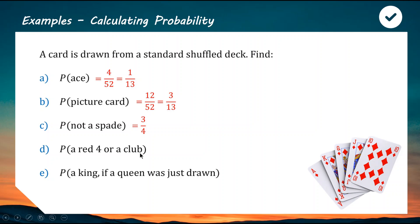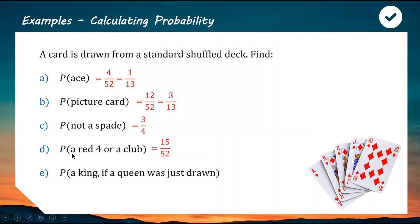Probability of a red four or a club: out of the 52 cards, we need to count how many are red fours and how many are clubs. Clubs is one suit so there are 13 of those. Red fours — there's the four of hearts and the four of diamonds, so there are two. Since we want this or that, we combine them: 13 plus 2 gives 15 cards out of 52.